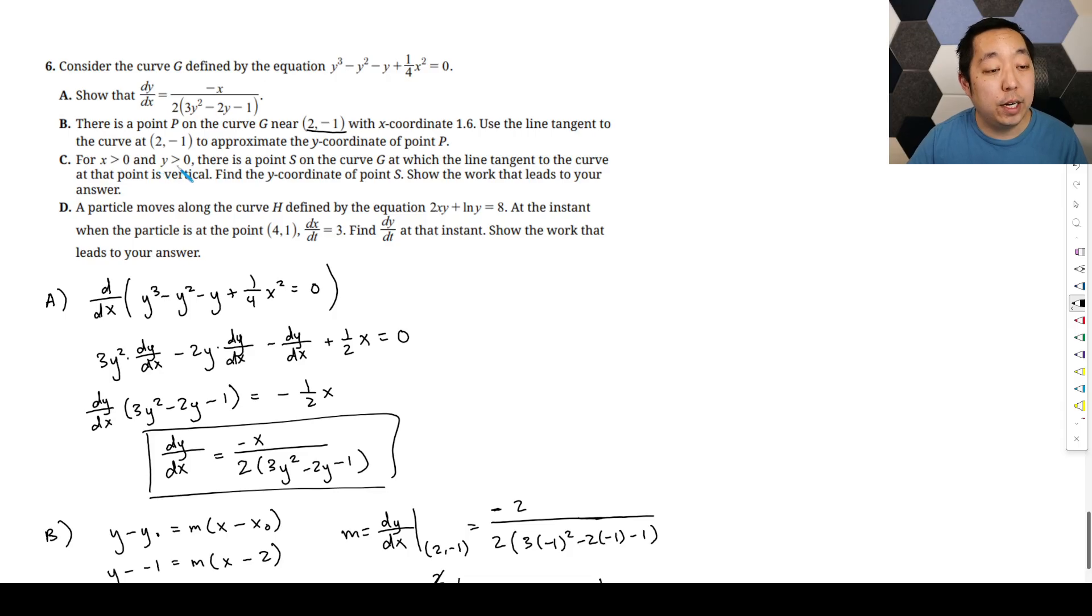For x greater than zero, y greater than zero, there's a point s on the curve g where the line tangent to the curve at that point is vertical, find the y coordinate of that point. So to have a vertical tangent line means the slope is like infinite, right? That's because vertical lines don't have slope. It's like, take a slope that's like 10,000. That's like a huge slope.